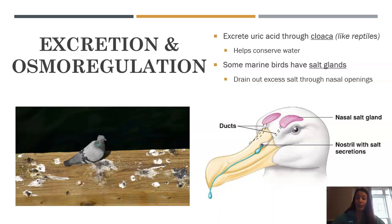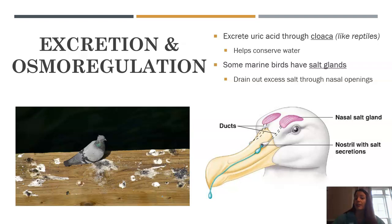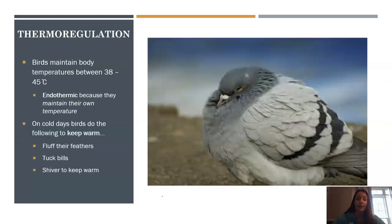In terms of excretion, birds poop a lot. They also have uric acid, just like reptiles, and they have a cloaca which helps them release this — also just like reptiles. Birds lay their eggs and excrete their waste all through their cloaca. Some marine birds also have salt glands, just like marine reptiles, and this structure helps get rid of excess salt in their bodies.